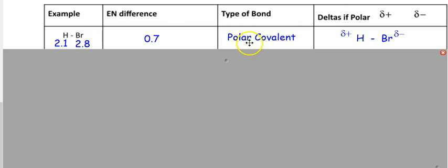What does that mean for you? Whichever, if it's polar, only deltas if polar. If it's nonpolar ionic, you don't do this. But if it's polar, the one with a higher electronegativity value is going to be the partial negative. The one with a lower electronegativity will be your partially positive. Let's try the next one.